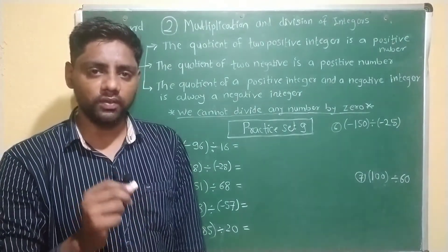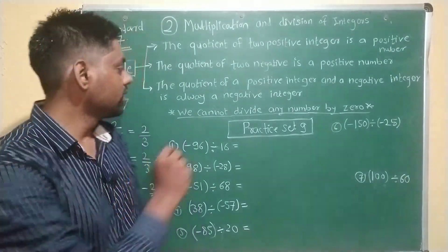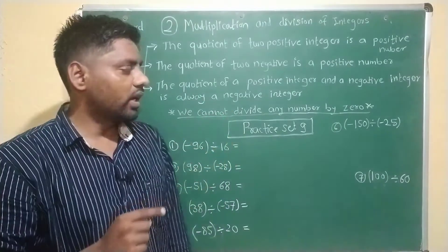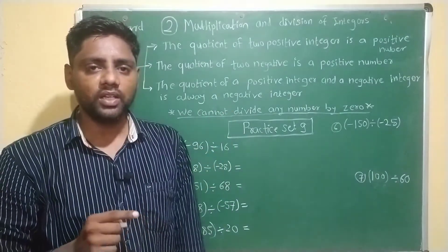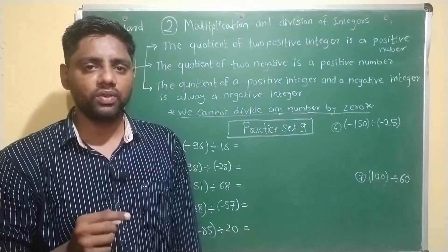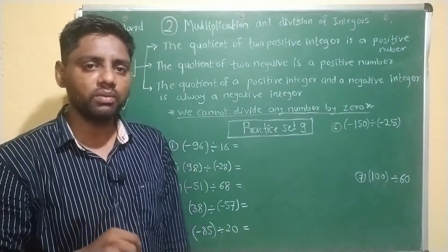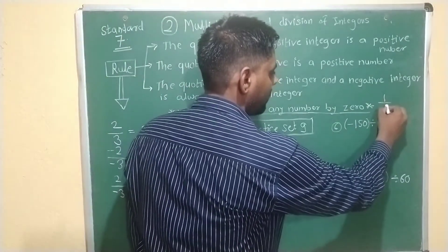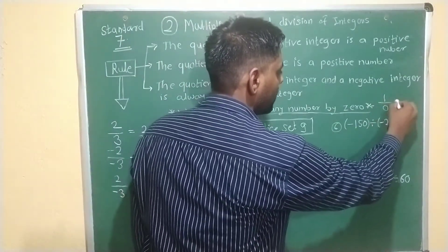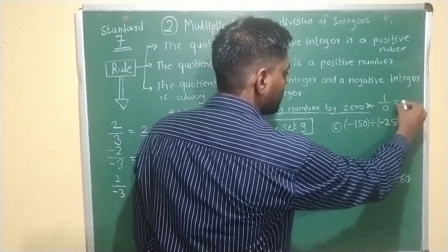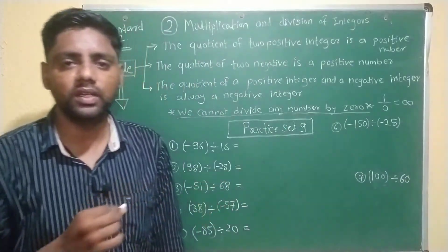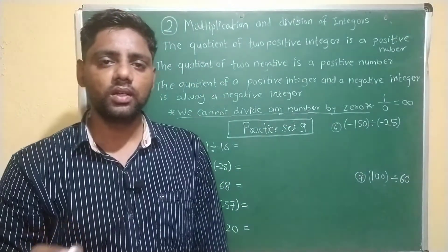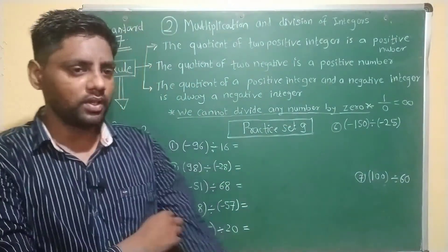Always remember: we cannot divide any number by 0. If you divide any number by 0, for example 1 divided by 0, the answer is infinity — that is not defined.